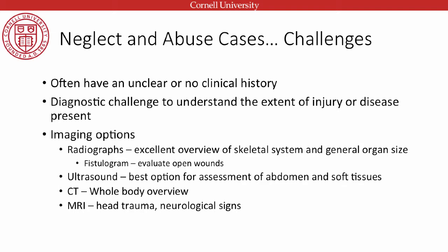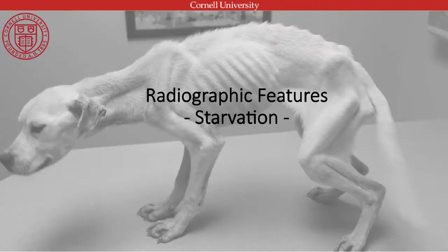Ultrasound is the best option for assessing abdominal disease and soft tissues — very helpful if you've got a swelling, want to check globe integrity, or identify abdominal bleeding. CT is the next step up; more expensive but can be done under sedation, provides a whole-body overview of the skeletal system, and is excellent for the thorax. MRI is employed when we have signs of head trauma or neurological disease, though it's used less commonly unless there's a particular concern for neurological injury.